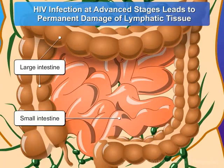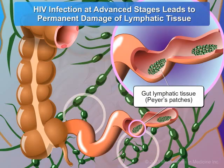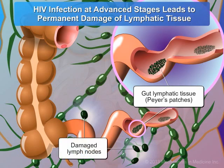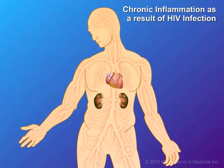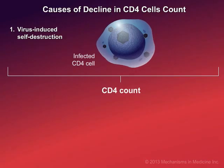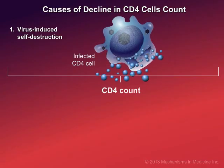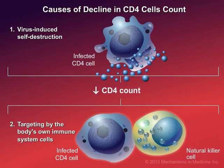HIV infection leads to fibrosis, or tissue remodeling, that causes damage to lymphatic tissue, which is unable to restore and maintain a population of CD4 cells, particularly in lymph nodes and gastrointestinal-associated lymphatic tissue, or GALT. HIV infection also triggers the immune system response, which results in chronic inflammation in the body. It is likely that the reduction of CD4 cells is caused by virus-induced self-destruction, as well as targeting by the body's own immune system cells.